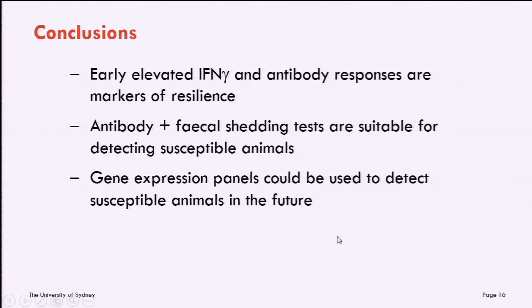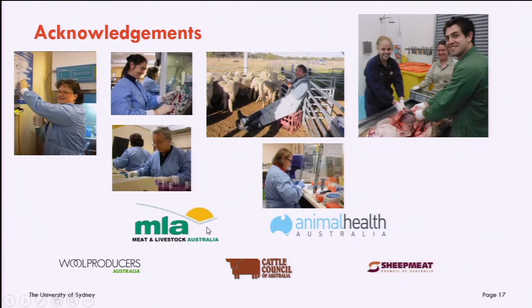In conclusion, based on our experimental trials, early interferon gamma and antibody responses are markers of resilience. We need to be careful when using the antibody test alone to diagnose disease, and should combine it with fecal culture — which many diagnostic guidelines already do. Gene expression is another promising avenue for understanding this disease. Finally, I'd like to thank the Johne's disease team at the University of Sydney, the many staff and students who have gone through the lab, and the livestock industry in Australia which funds our research.